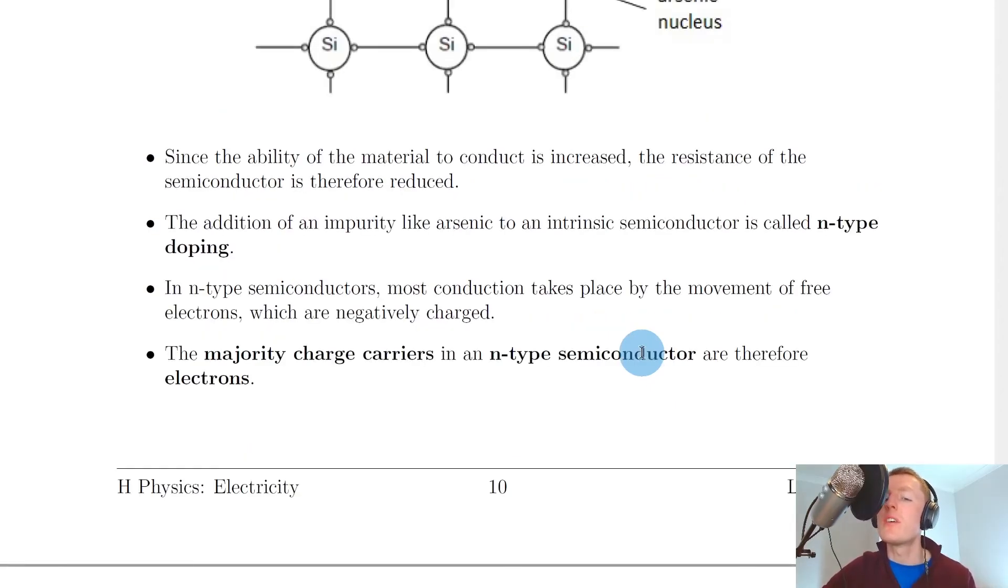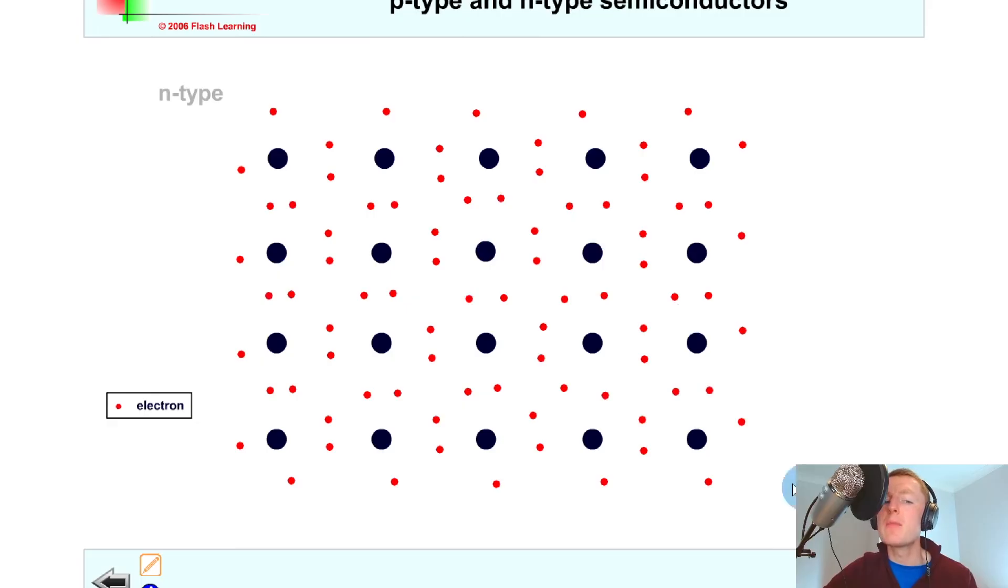Just to show you a quick simulation to help you understand this, let's say I've got an n-type material here where the red dots represent the electrons and the larger black dots represent the nuclei of our atoms. Let's introduce an impurity atom of arsenic here. You'll see it's introduced an extra electron there, and if we click play, you'll see that extra electron can move about in the material and increase conductivity.